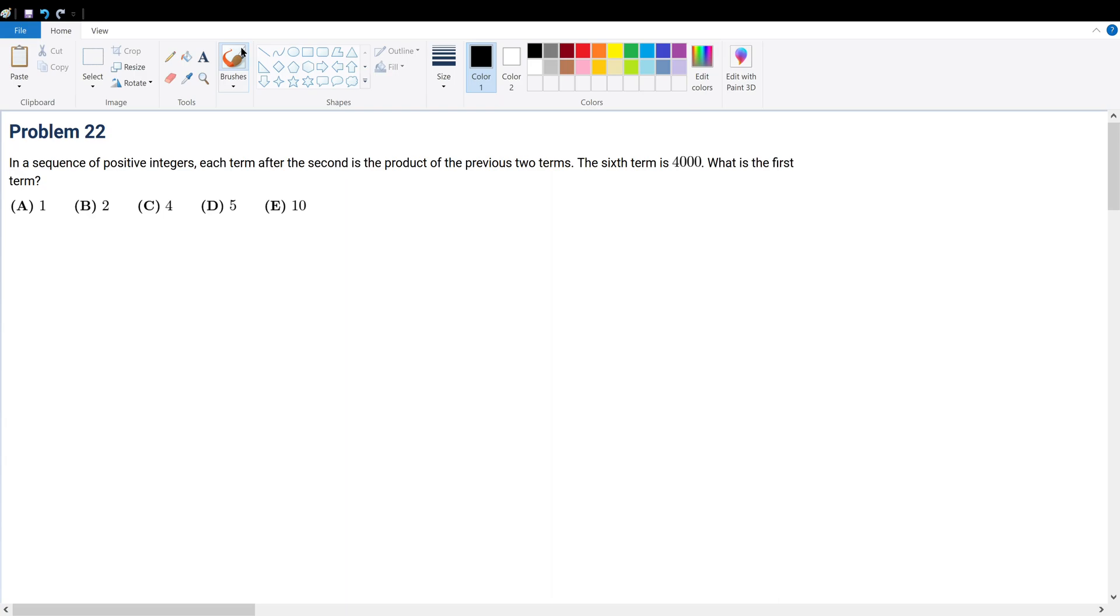Problem 22. In a sequence of positive integers, each term after the second is the product of the previous two terms. The sixth term is 4000. What is the first term?